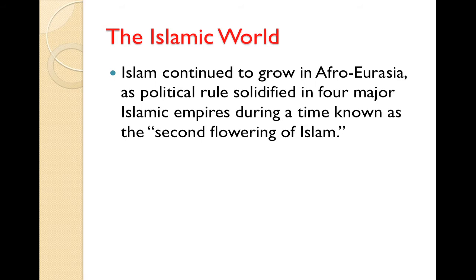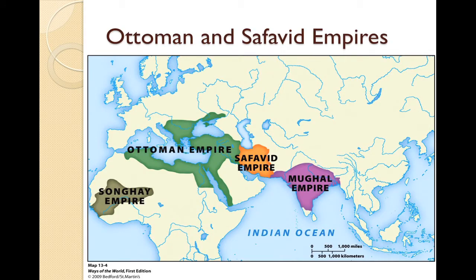The Islamic world: Islam continued to grow in Afro-Eurasia as political rules solidified in four major Islamic empires during a time known as the second flowering of Islam. The Ottoman Empire was a Turkic-Islamic empire that advanced into Eastern Europe, eventually conquering Constantinople in 1453 and rooting a Muslim presence in Eastern Europe. To the east, the Safavid Empire continued Persian influence in the region and imposed Shia Islam on its whole empire, leading to conflict with the Sunni Ottoman Empire. Look for examples of conflict between the two empires and the complexity of the Islamic world, which was far from uniform.